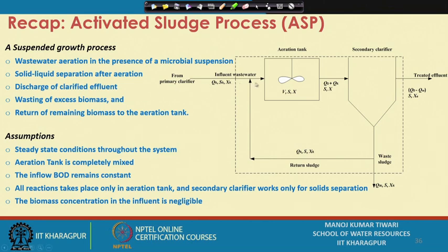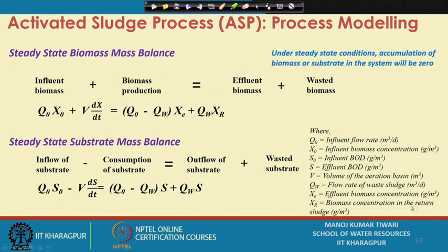The effluent from the primary clarifier comes in, then reaction takes place in the aeration tank, and phase separation takes place in the secondary clarifier. The effluent goes away, and out of the sludge which comes out, part of the sludge is wastage and part of the sludge is recycled back to the aeration tank.